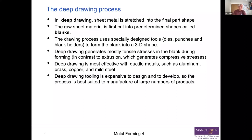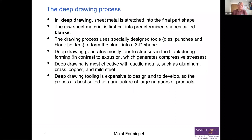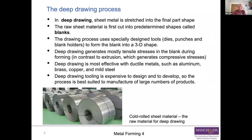Deep drawing tooling is expensive to design and develop, and it has to have quite tight tolerances and is made of very strong materials. Because of that, you don't use deep drawing to make one-off parts - it's best suited to making lots and lots of identical products, like drinks cans. You pay for your very expensive tooling and press, and then use it again and again. The starting point material for deep drawing is cold rolled sheet - just like many forming processes, you're taking the output of another forming process as the input for this one.